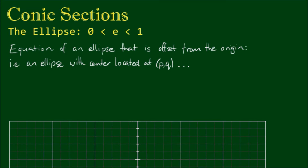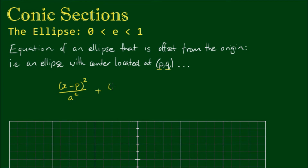The first variation from the standard form is an ellipse that is not centered at the origin. The equation of an ellipse offset from the origin, say centered at arbitrary coordinates p, q, has the form: x minus p all squared over a squared, plus y minus q all squared over b squared, equals 1.